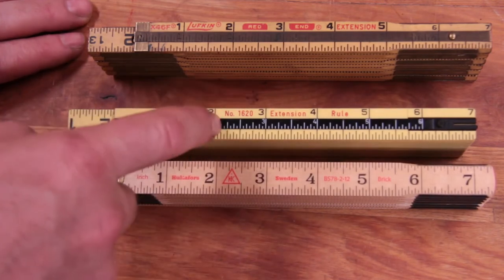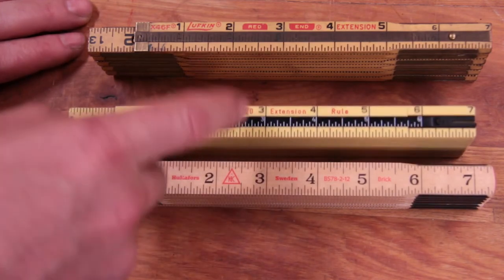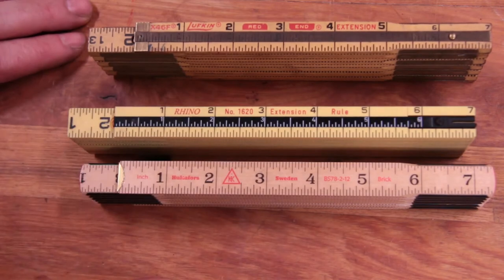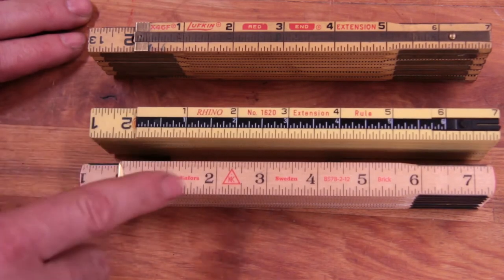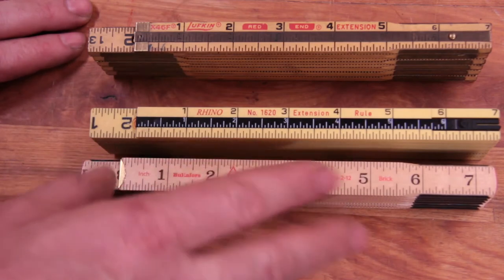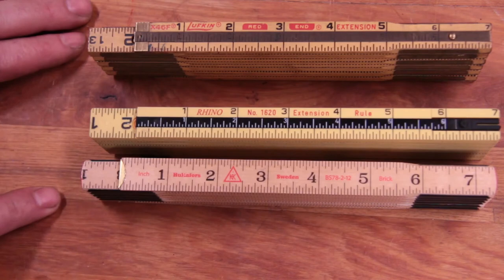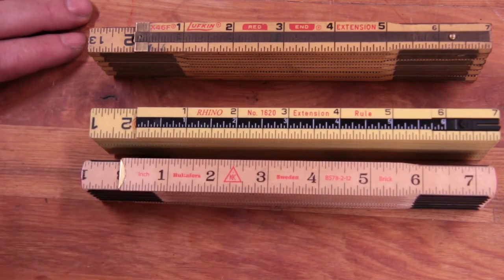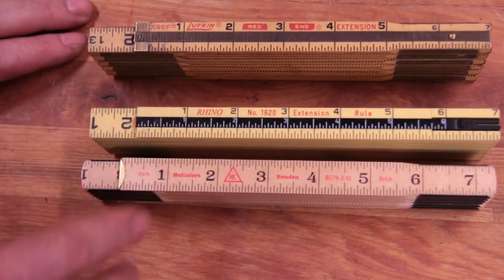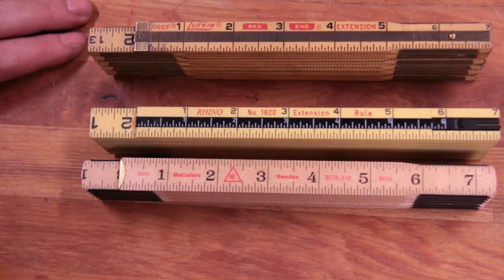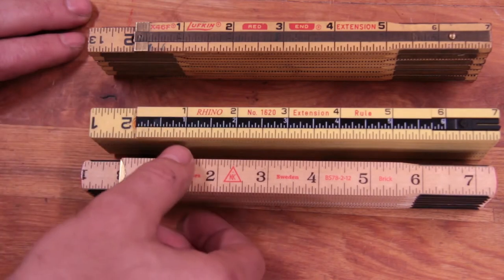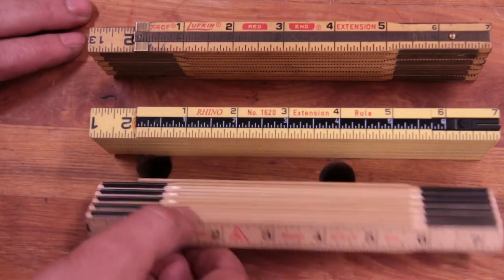You can get this ruler in engineering and brick scale also. And you can get the Lufkin in all sorts of different scales. But if you order it from Amazon, be prepared to get not exactly what you ordered. I could send it back, but since it took a month to get here, I'm not going to wait another month just to get inches on the other side. It's perfectly functional with the brick scale, and if I ever need to use a brick scale, I'll have a ruler that has it.